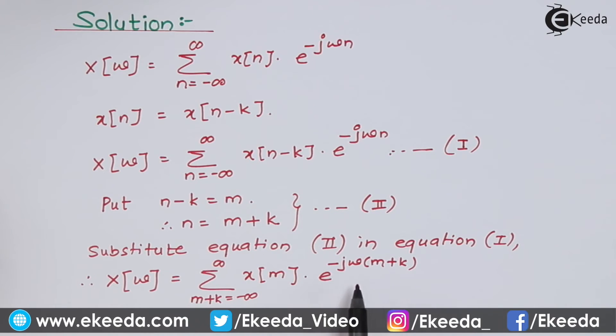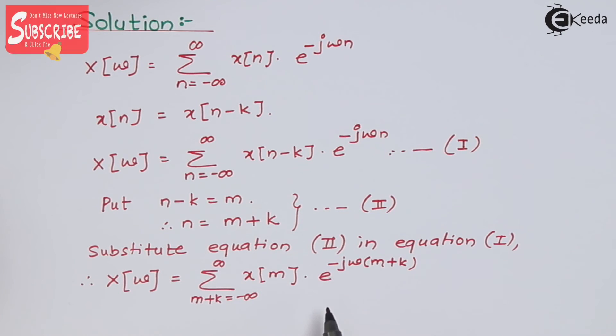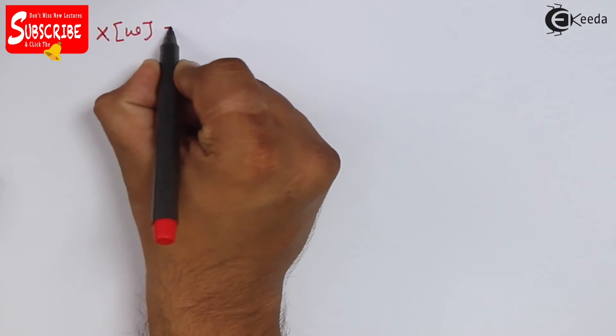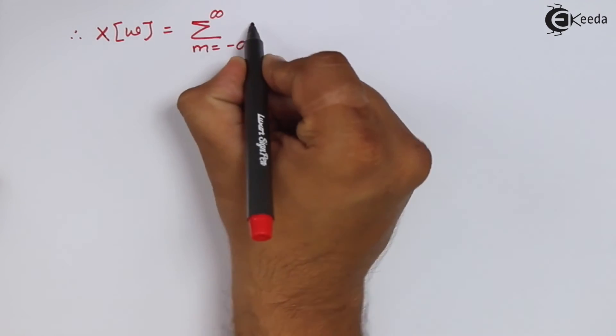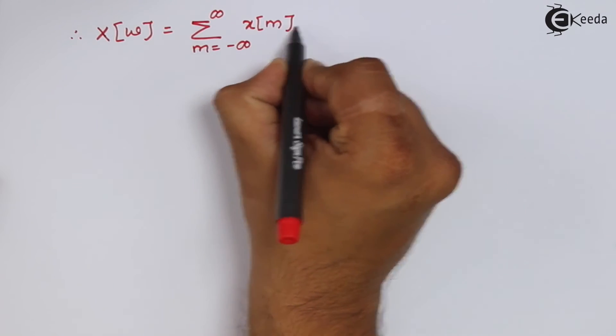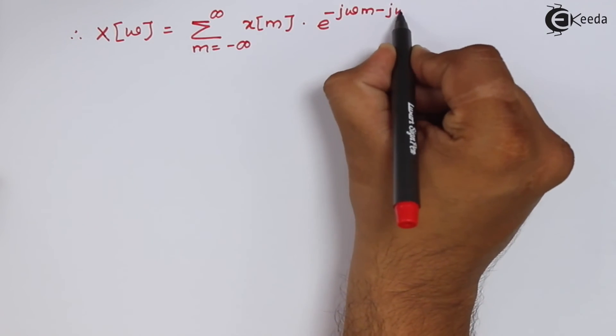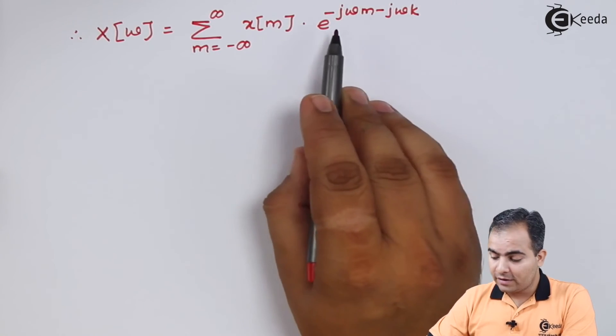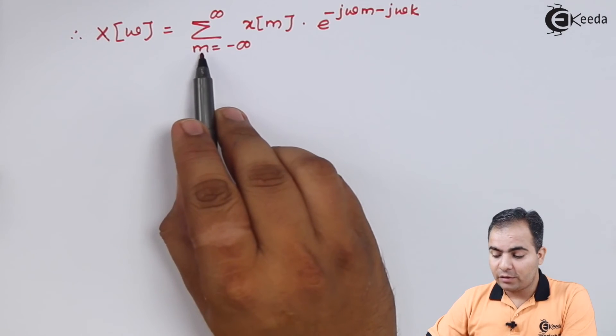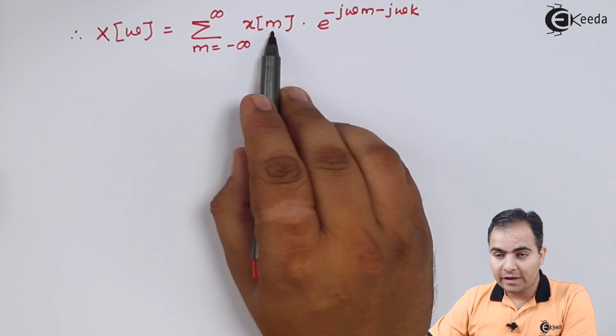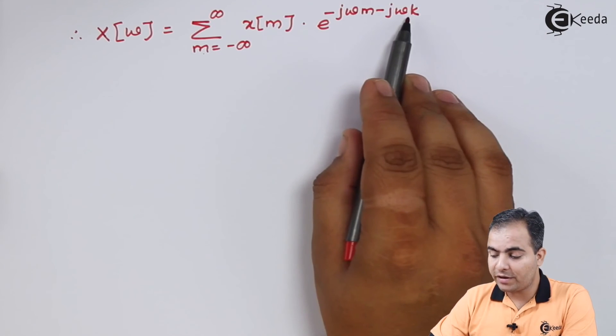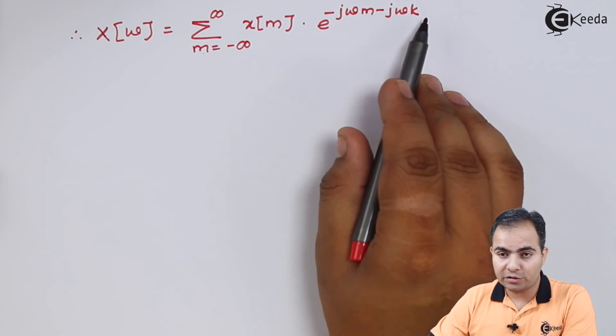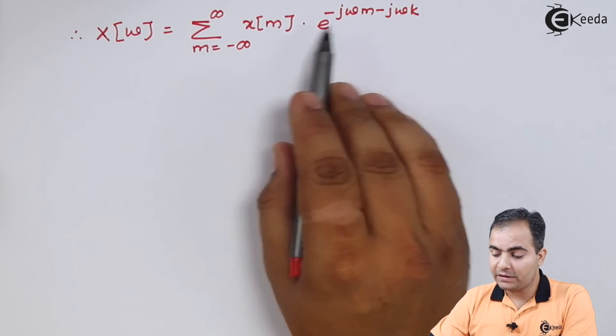Now look at it. We can split this exponential power, but first we will multiply minus jω inside this bracket. Now I will split this exponential power. The reason is this summation only depends on variable m. Here we have m, here we have m, but here we don't have any m. In this case we have a k value and it is a constant. That's why I am going to separate this exponential power.